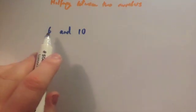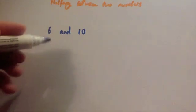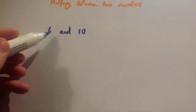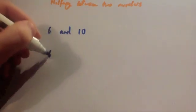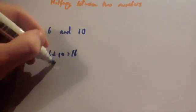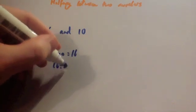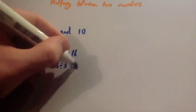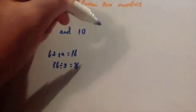The way I like to do it personally is just add the two numbers and halve it. So if I was asked halfway between six and ten, I would do six plus ten equals sixteen, and sixteen divided by two — half of sixteen — is eight. So the midway between those two numbers is eight.